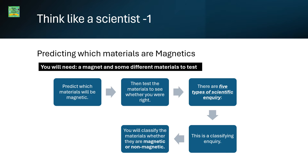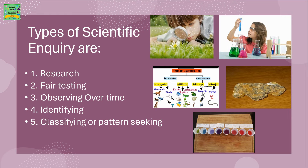There are five types of scientific enquiry. This activity is a classifying scientific enquiry — you will classify the materials as either magnetic or non-magnetic. The five types are: research, fair testing, observing over time, identifying, and classifying or pattern seeking.